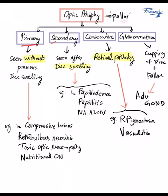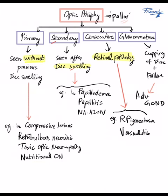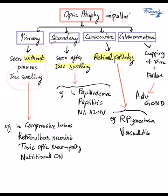Primary optic atrophy implies there is no previous disc swelling. For example, in compressive lesions, retrobulbar optic neuritis, toxic optic neuropathy, and nutritional optic neuropathies, there is no disc swelling. So without any disc swelling, there is going to be development of pallor.